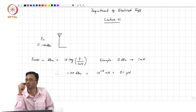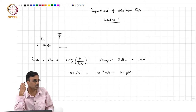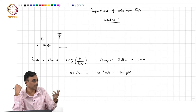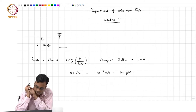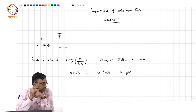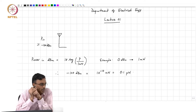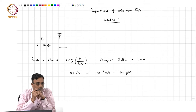Given that this light probably produces a few tens of watts, you can imagine that the amount of RF energy your cell phone is receiving and making sense of is a very very small quantity. Compared to the light in the room, we are talking about powers which are about 14 orders of magnitude smaller than the amount of light power floating around in this room.